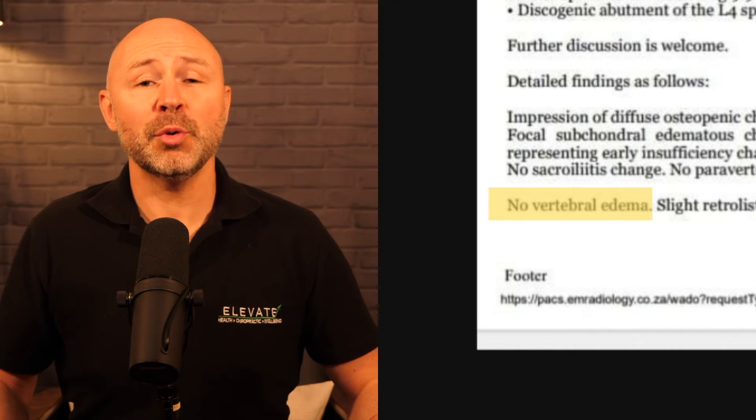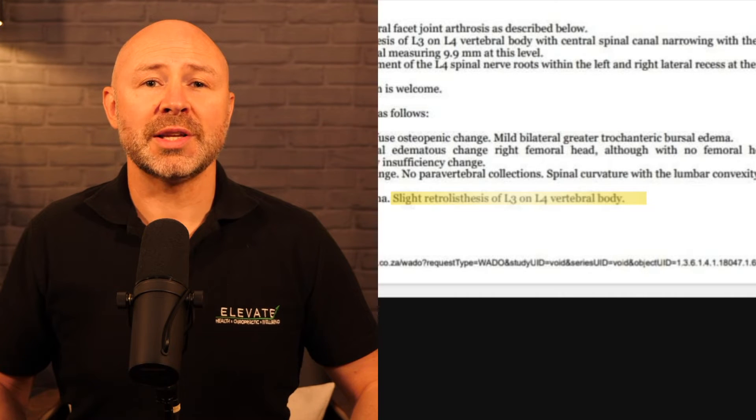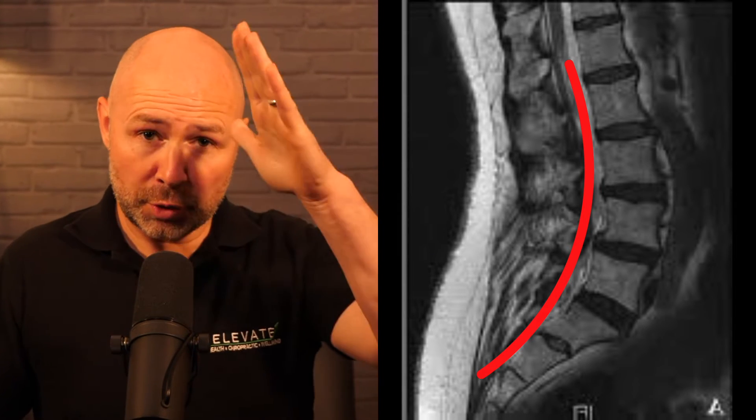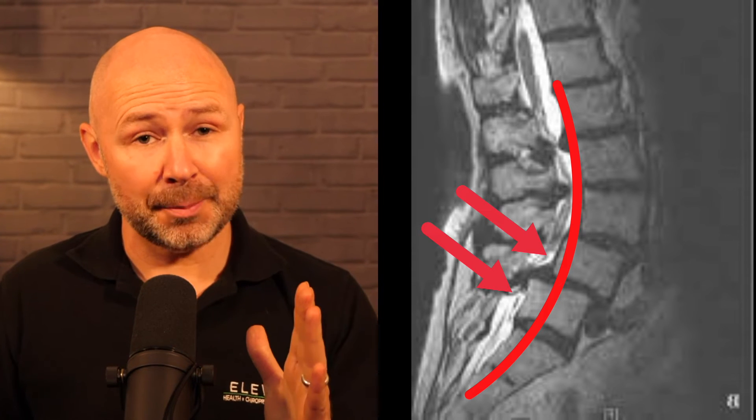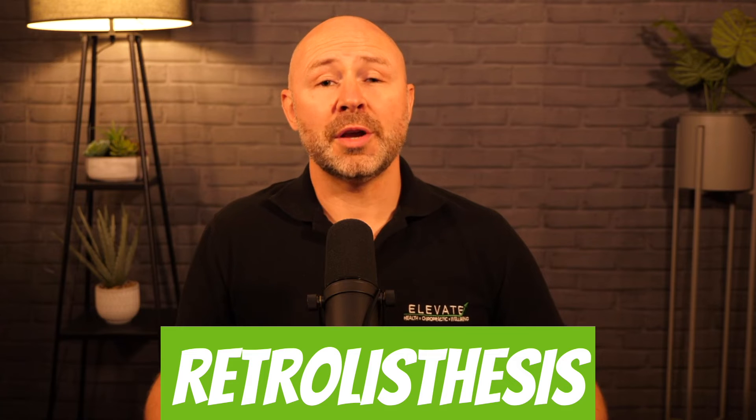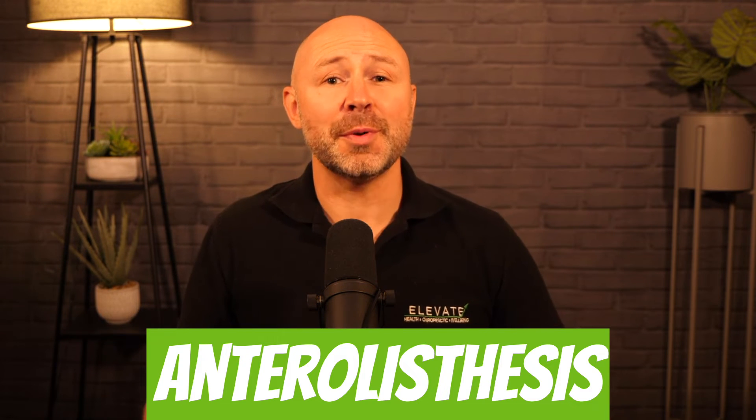No vertebral edema — edema in the vertebral body can be associated with some malignancies or cancers, so we can move the likelihood that the pain is caused by cancer way down our list of differential diagnoses. Slight retrolisthesis of L3 on L4 vertebral body — we'll see this by looking at the spine from the side in the sagittal view. The smooth curve will be interrupted by the L3 vertebral body sitting back and narrowing the neural foramina that the spinal nerve will pass through. This could be genetic or, most likely in this case, caused by arthritic or degenerative change — the X-ray report describes it as a degenerative retrolisthesis. The opposite is an anterolisthesis, which is considered more serious as it requires a structural defect in the pars interarticularis that allows the spine to shift forwards under gravity.